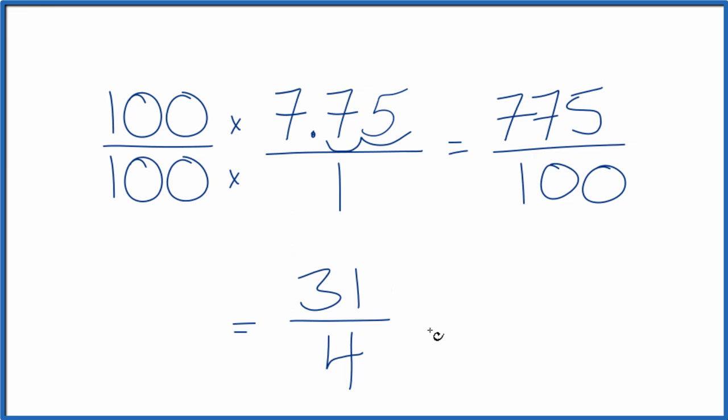So let's change it to a mixed number. 4 goes into 31 7 times. 7 times 4 is 28, and we have 3 left over. Just bring the 4 across. So if you wanted to have the fraction 31 fourths as a mixed number, it would be 7 and 3 fourths.